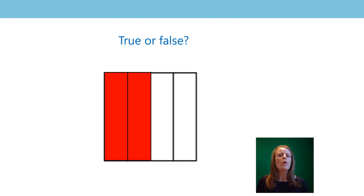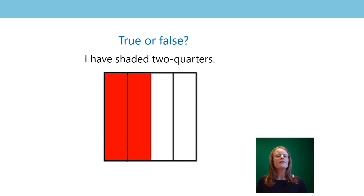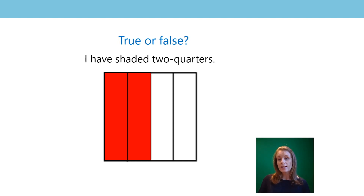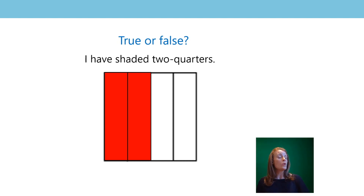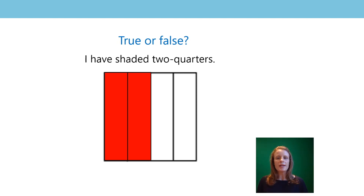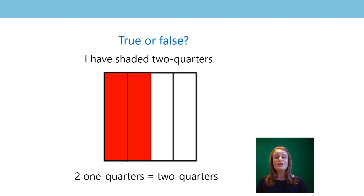True or false? I have shaded two quarters. Have a think. Pause the video and tell me: if it's true, why? If it's false, why? Have you had a try? Two quarters shaded — if it's two quarters, I need to have four equal parts altogether: one, two, three, four. That would be my denominator. And two of them shaded — two would be my numerator. I know that's correct because two quarters is the same as two one quarters. I can see two one quarters. It was true.